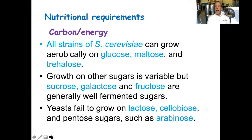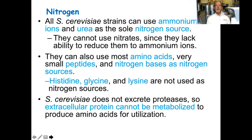Yeast fail to grow on lactose, cellobiose, and pentose sugars — 5-carbon sugars — such as arabinose. Yeast require nitrogen. All S. cerevisiae strains can use ammonium ions and urea as the sole source of nitrogen. They cannot use nitrates, since they lack the ability to reduce them to ammonium ions. They can also use most amino acids, very small peptides, and nitrogen bases as nitrogen sources. The amino acids histidine, glycine, and lysine are not used as nitrogen sources.